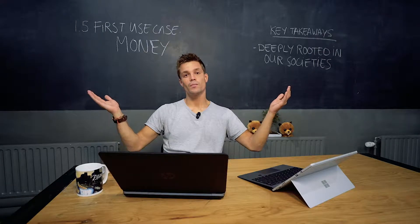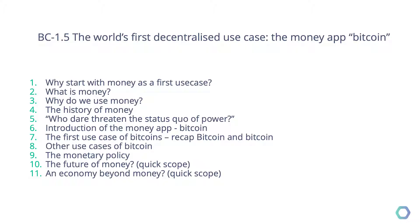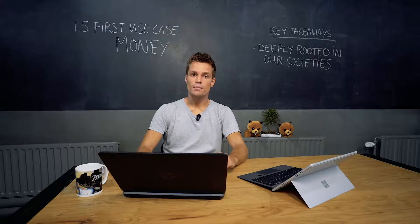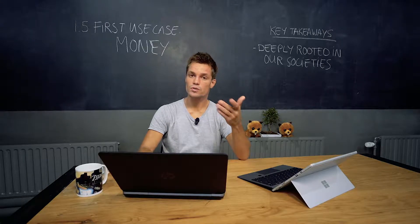We have a decentralized public infrastructure, but what are we going to use it for? Let's start with money, because it's not only one of the easiest applications to tackle, but also one of the most important. Money is deeply rooted in our society, which is a key takeaway, making it a very important component of other applications. If you tackle money correctly, you can build other applications upon that money layer, because other applications will most likely use your decentralized form of money.